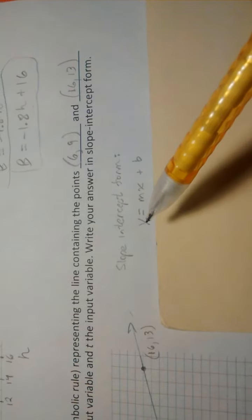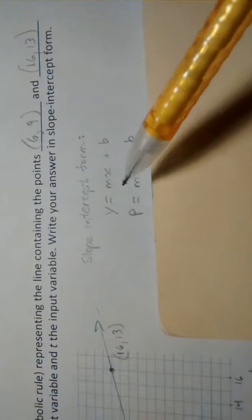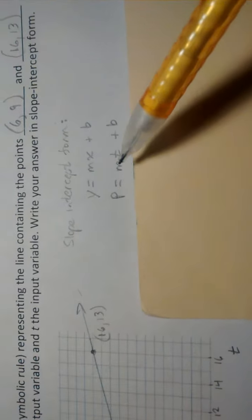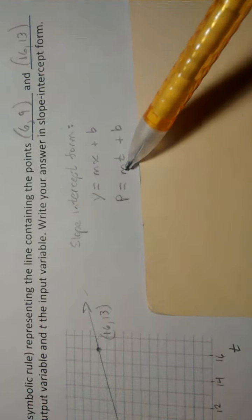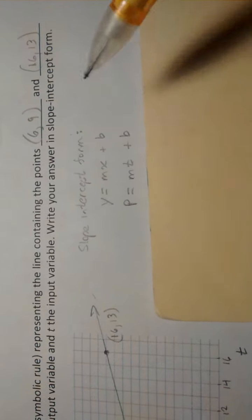Not using y's and x's, but our variables given P and T, your slope-intercept form looks like this. And to write your symbolic rule, you only need two things here, the slope, and place that there as the coefficient of the input variable, and then the vertical intercept.